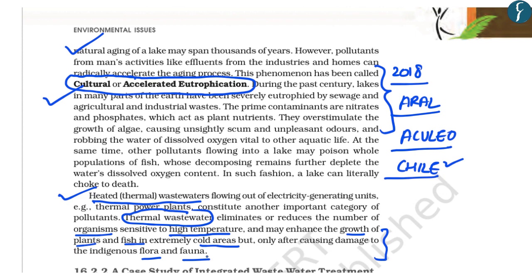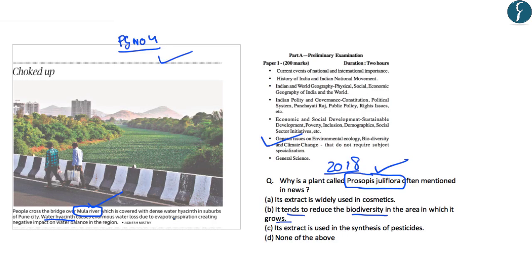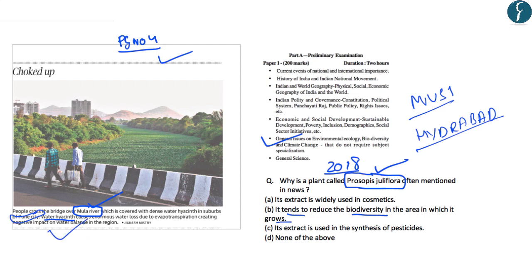Regarding water hyacinth, you should know its scientific name — it is the world's most problematic aquatic weed and is also known as 'Terror of Bengal'. The Moola River is an important river of the city of Pune. Another important river is the Musi River, which passes through the city of Hyderabad. This article covered the various problems caused by discharge of domestic sewage into water bodies.